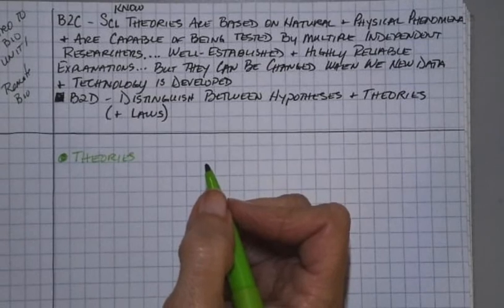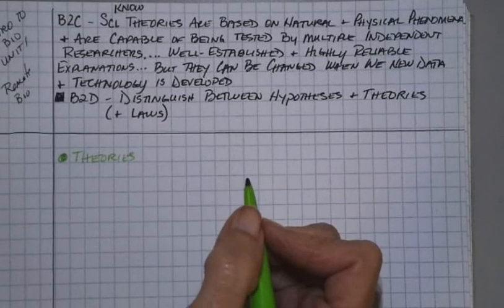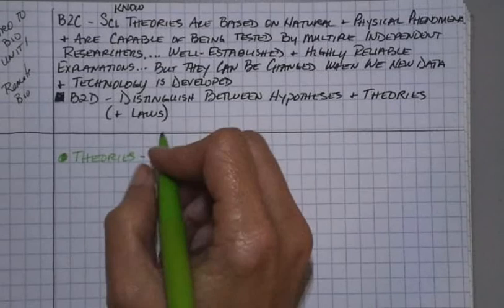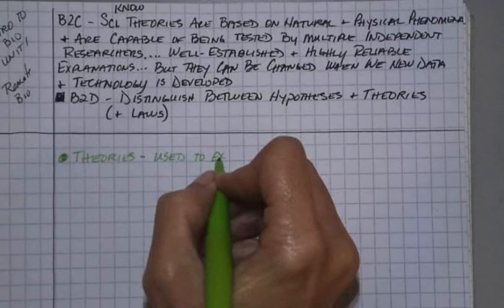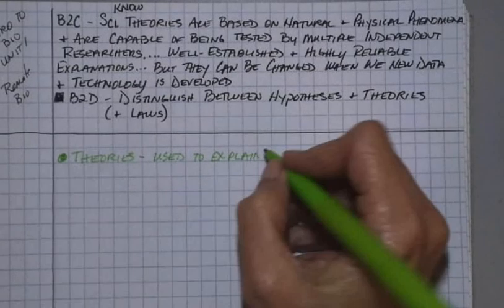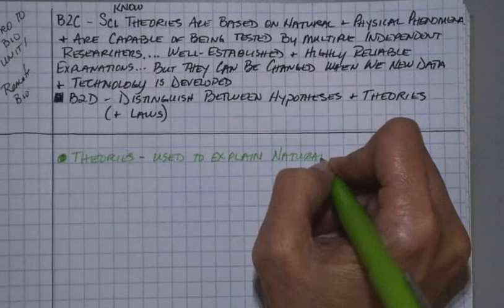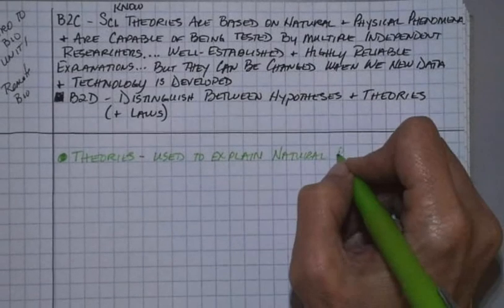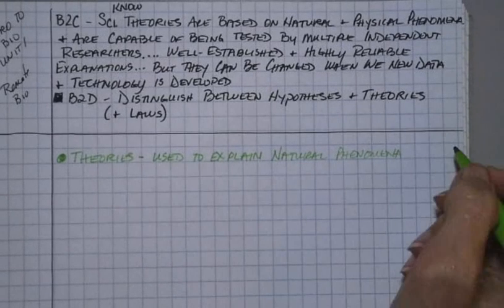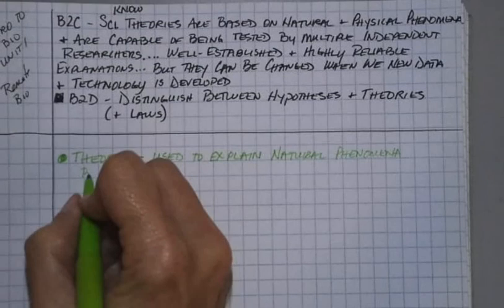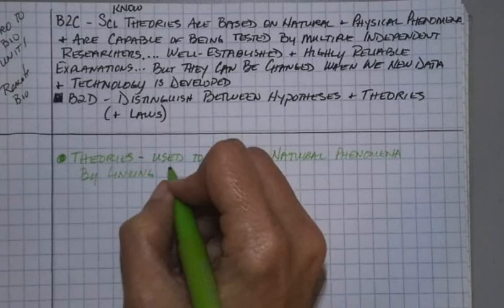A hypothesis ends up being one piece of a theory. So a theory can be made of, you know, 25 different hypotheses that are linked together. So theories are used to explain natural phenomena. Again, you've heard that phrase before: natural phenomena, things, phenomena, things that we see in nature. Natural phenomena by, here's the key, by linking multiple, and I'm going to put the word in parentheses, durable.